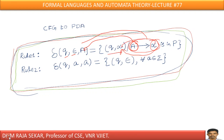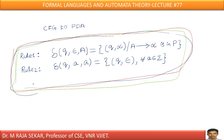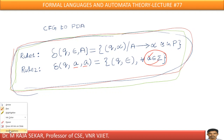Another rule is simple and straightforward. For every terminal symbol A belonging to sigma: delta of (Q, A, A) = (Q, epsilon).